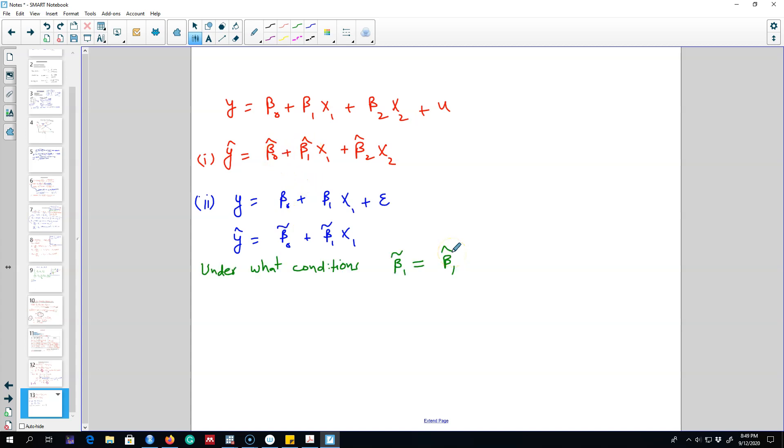The question is under what conditions beta 1 tilde will be equal to beta 1 hat. We are essentially interested in the effect of x1 on y. The estimated value of beta 1 will tell you the effect of x1 on y and we are getting the same effect here but our two models are different. So under what conditions will these two models be equal?